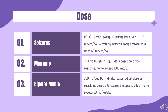Dose — Complex Partial Seizures: Indicated as monotherapy and adjunctive therapy for complex partial seizures occurring either in isolation or in association with other seizure types. IV: Valproate sodium 10–15 mg/kg/day divided Q12H, infused over 1 hour; maximum dose 60 mg/kg/day; do not exceed 14 days; switch to PO as soon as possible.